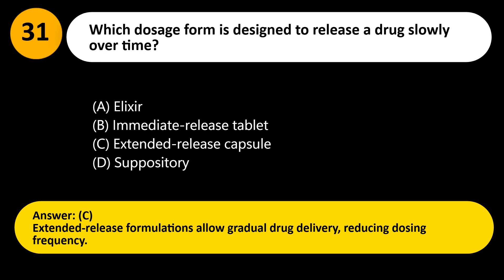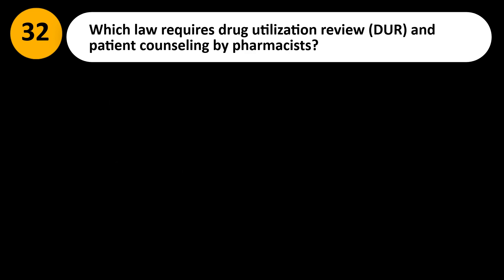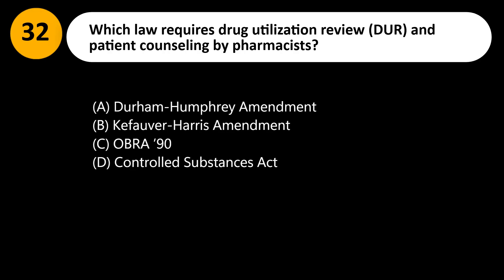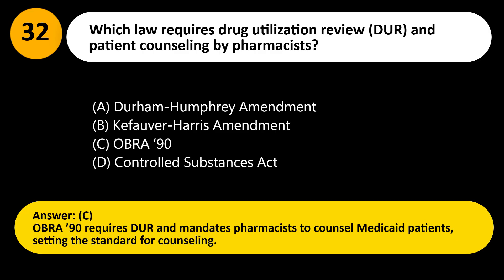Which law requires drug utilization review (DUR) and patient counseling by pharmacists? A. Durham-Humphrey Amendment. B. Kefauver-Harris Amendment. C. OBRA 90. D. Controlled Substances Act. Answer: C. OBRA 90 requires DUR and mandates pharmacists to counsel Medicaid patients, setting the standard for counseling.